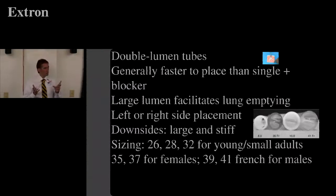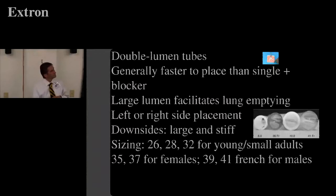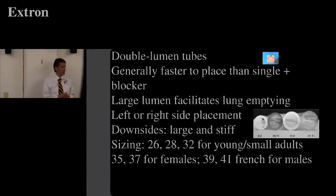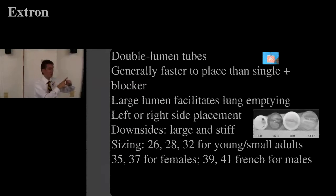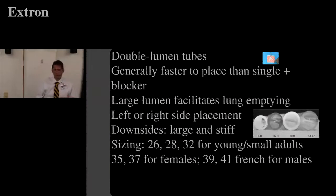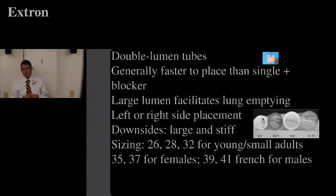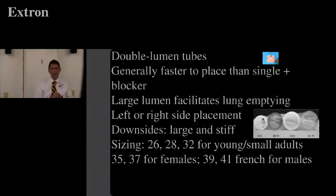Regarding left versus right sided tubes: right side might seem easier to place but has a big downside. The right upper lobe takeoff is about 2.5 cm off the carina — right about where you want your cuff to be. If that cuff sits over the right upper lobe takeoff, you've excluded a lobe you didn't want to exclude. So most commonly we use left-sided tubes for just about everybody because placement doesn't have to be as precise.